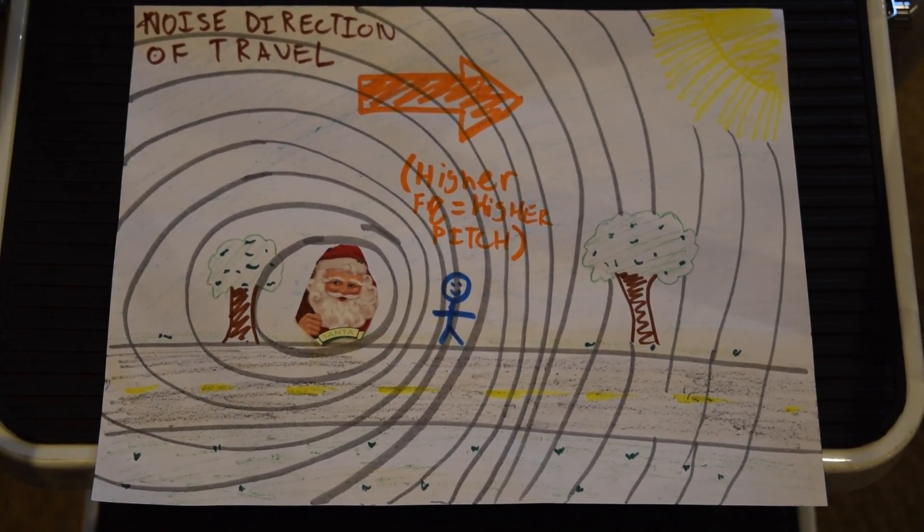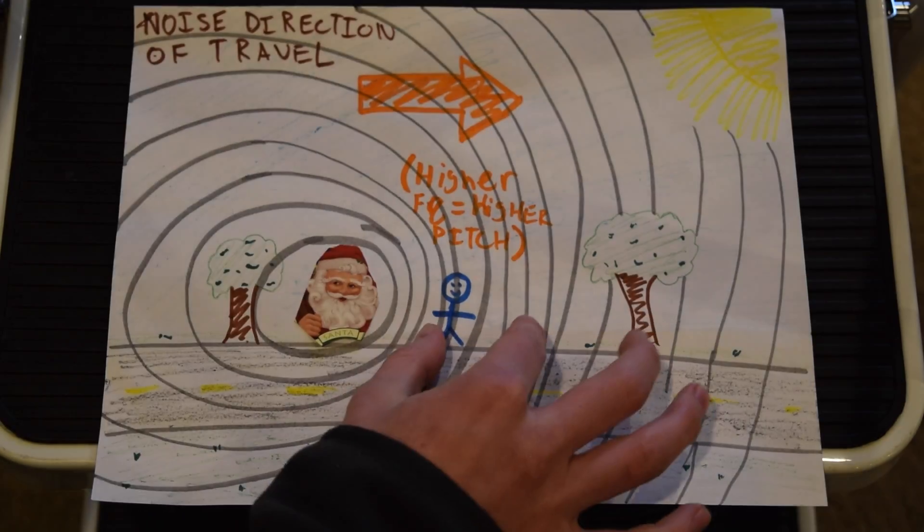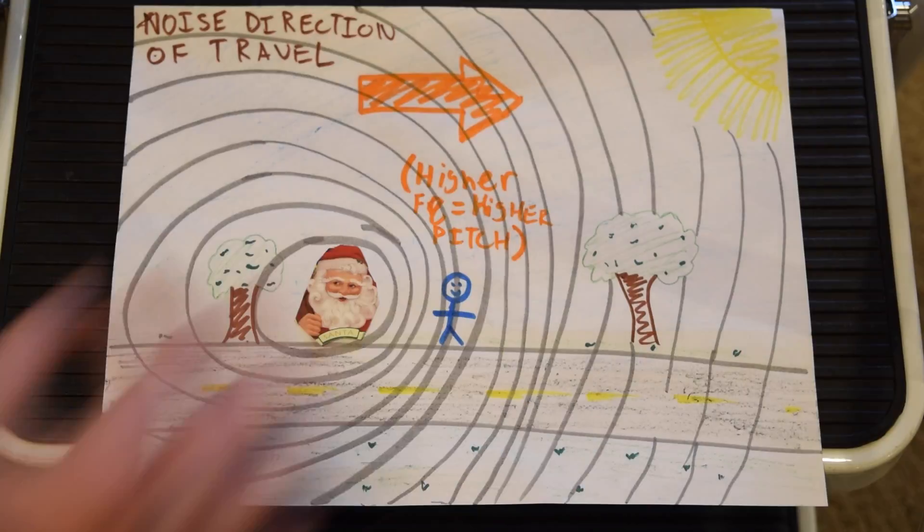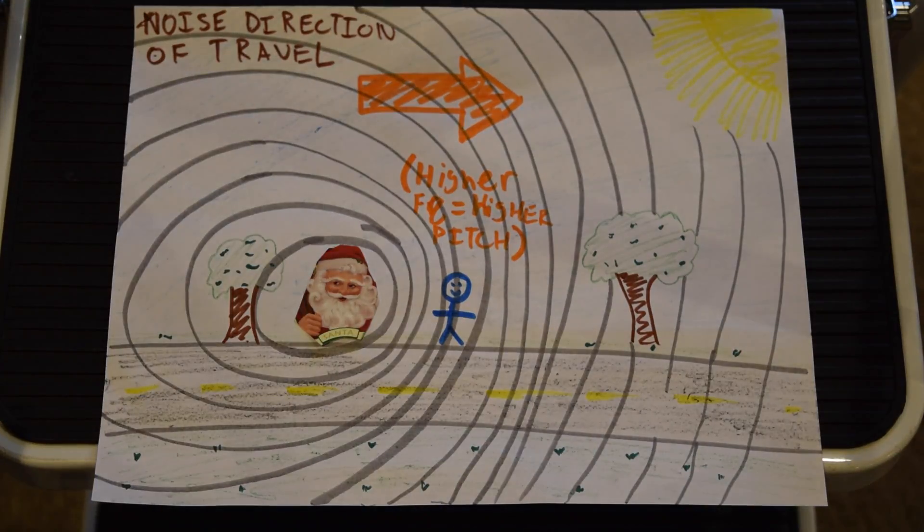Before the car passes, the sound waves in front of the car are very close together and this creates a high frequency. Because we perceive sound and pitch, we hear a high pitched noise.